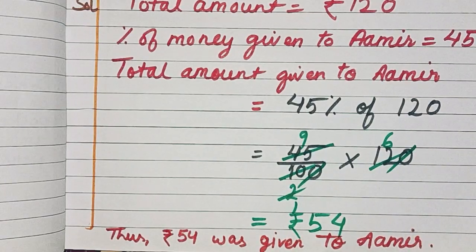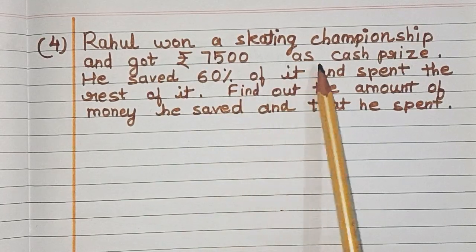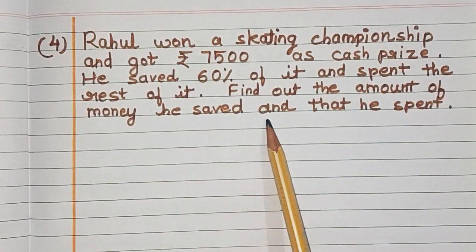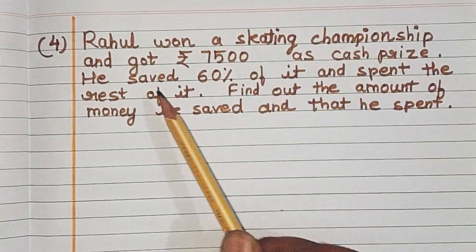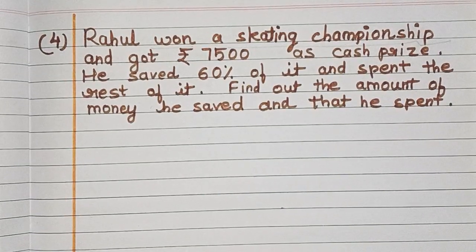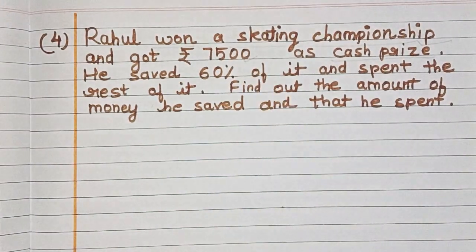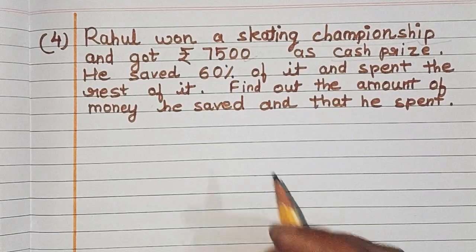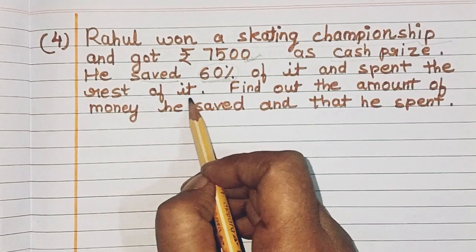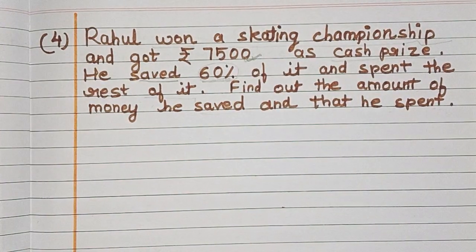Rahul won a skating championship and got a cash prize of Rs. 7,500. He saved 60% of it and spent the rest. We need to find the amount he saved and the amount he spent.